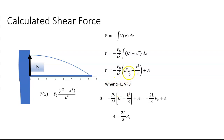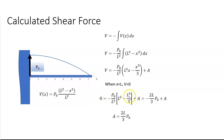Substituting x equals l: l³ minus l³/3 gives two-thirds of l³ times p₀ plus A equals zero. So A must equal negative 2l³p₀/3. Substituting that back into the equation gives us the shear force at any point.